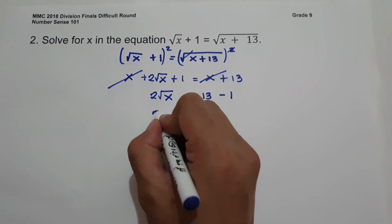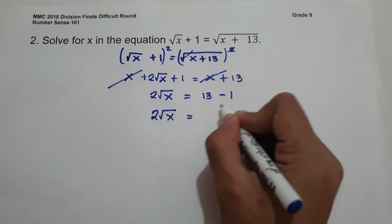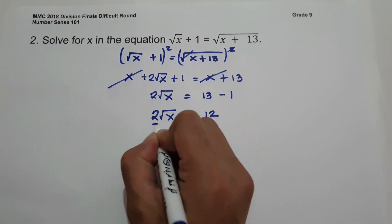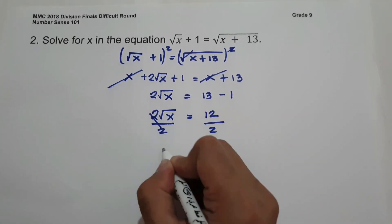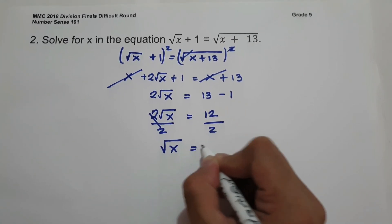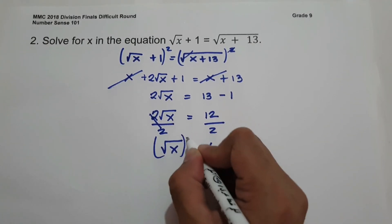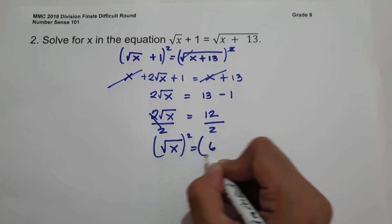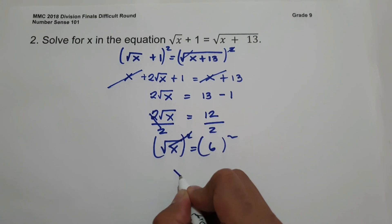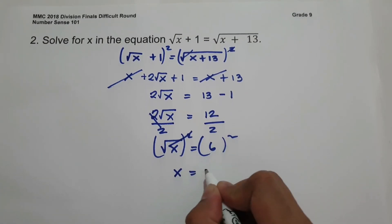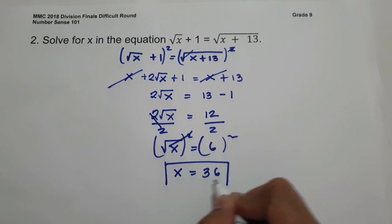So 2√X = 12. Dividing both sides by 2 gives √X = 6. Squaring both sides to find X: X = 6² = 36. So this will be our answer.